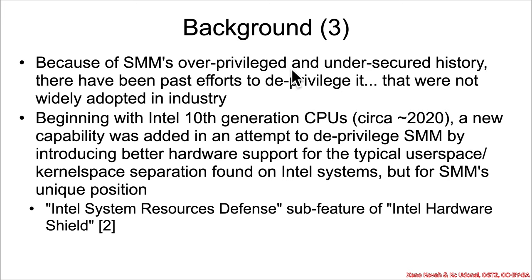Because SMM was a little bit overprivileged and undersecured, there had been past efforts by Intel to deprivilege it by using virtualization — wrapping the entire SMM in its own virtual machine and having it communicate with the host OS via another VM. But bare metal virtualization was not used in most places, and that's why this mechanism didn't get widespread adoption. In more recent Intel CPUs, they tried to add a new mechanism for deprivileging that didn't require firmware makers to build a whole hypervisor for SMM.